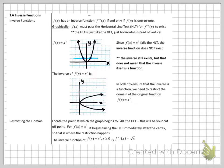Okay, section 1.6, inverse functions. f of x has an inverse function, f inverse, this little negative 1 exponent thing, we say f inverse. If and only if f of x is one-to-one. So graphically, f of x must pass the horizontal line test in order for f inverse to exist.